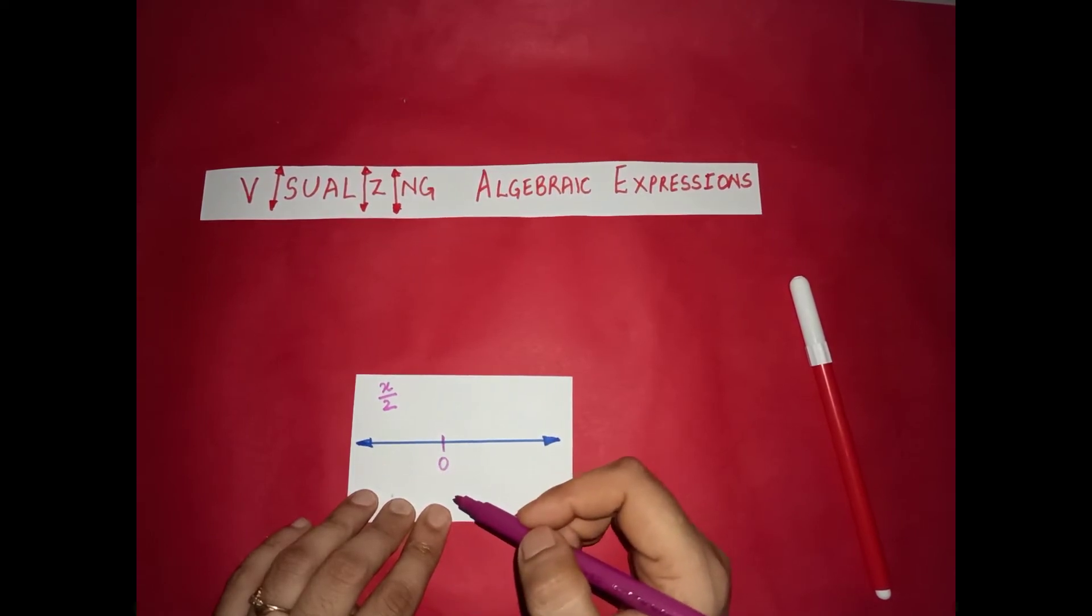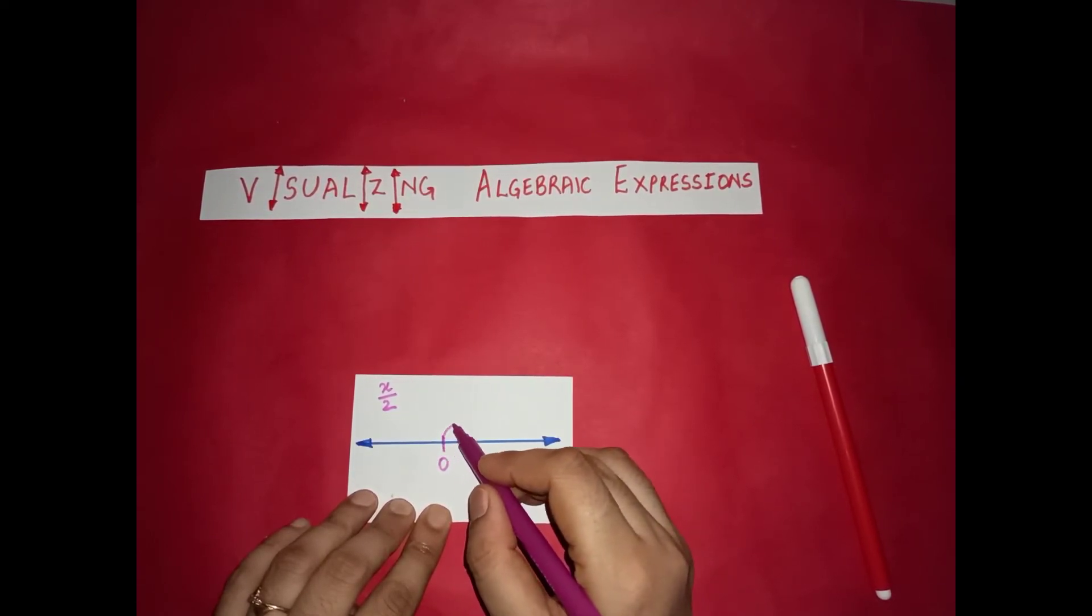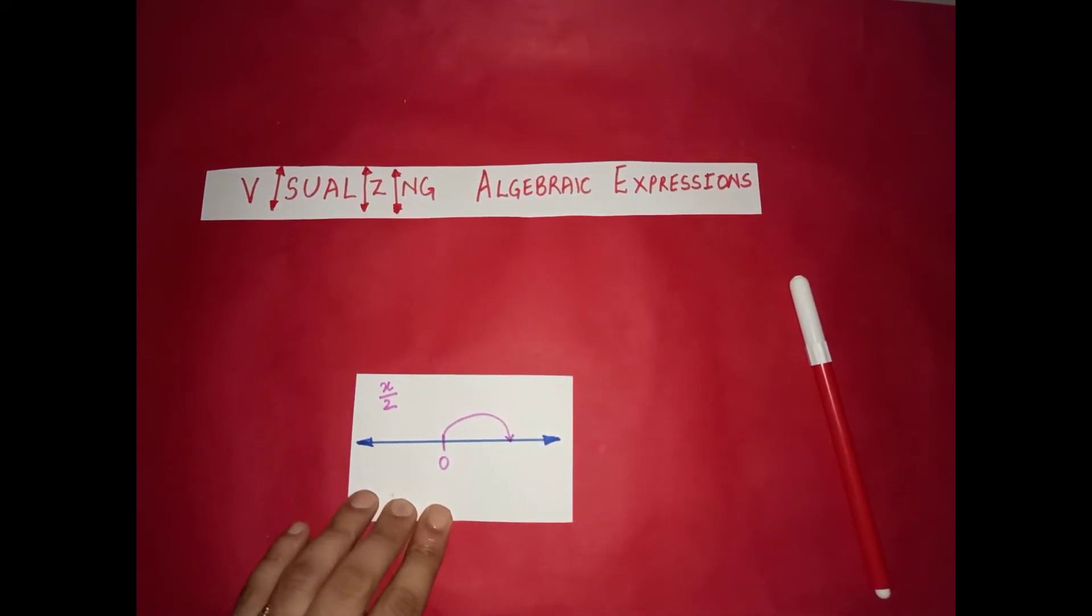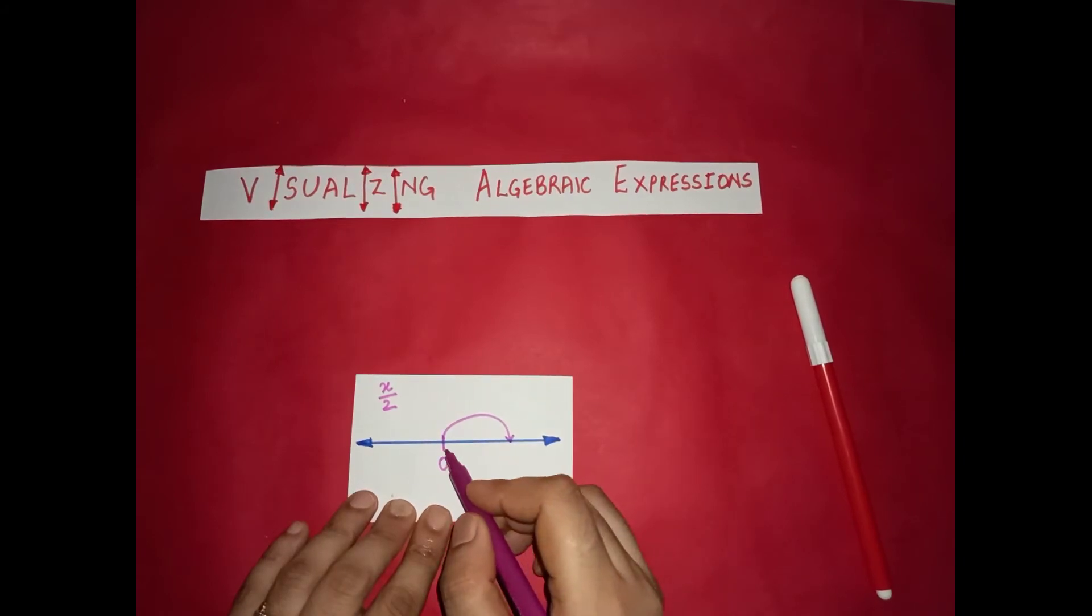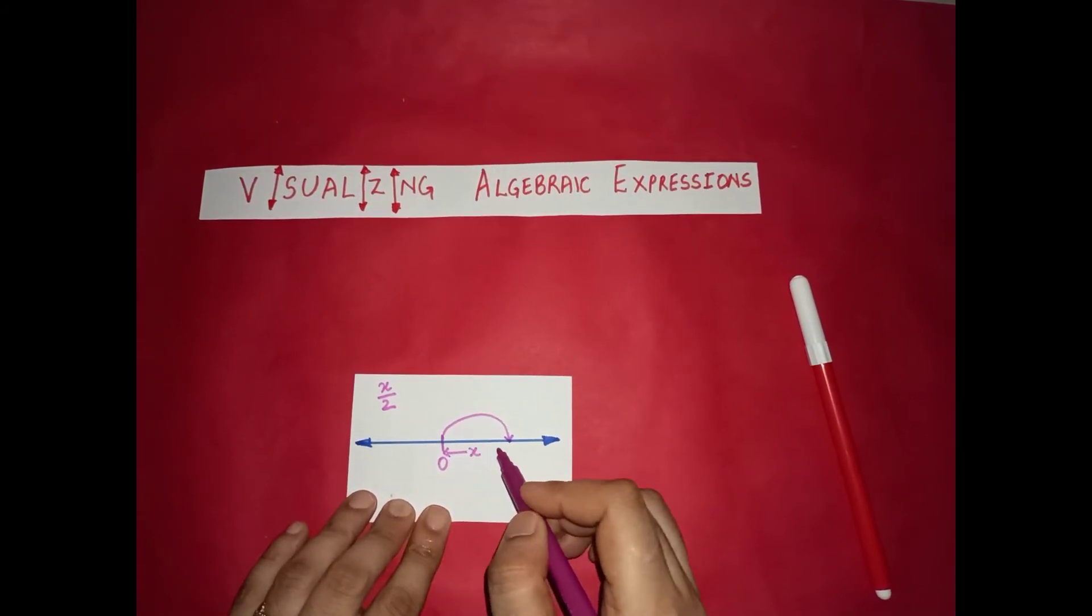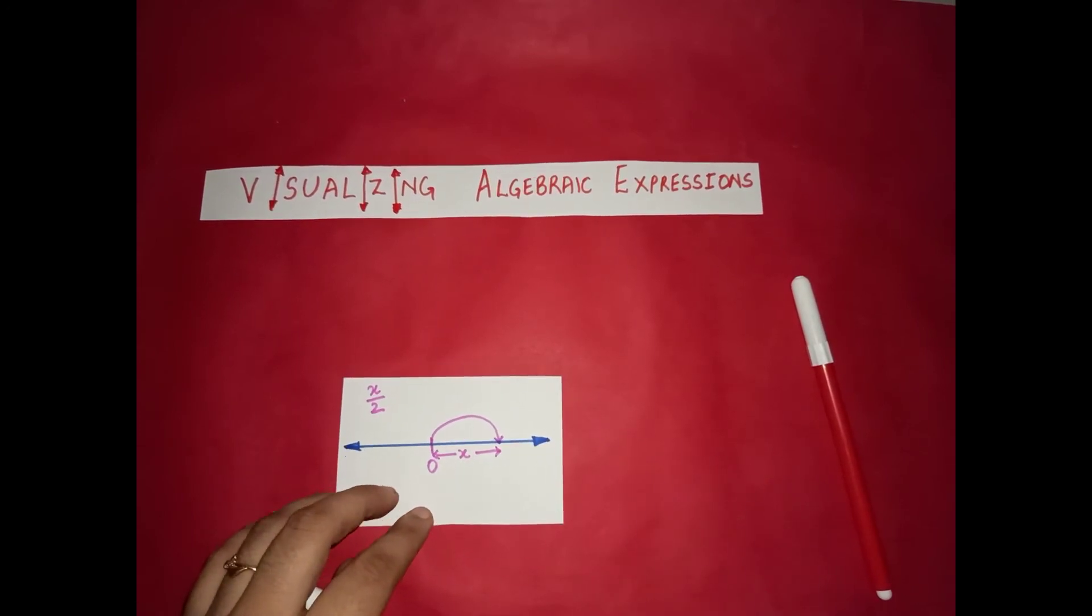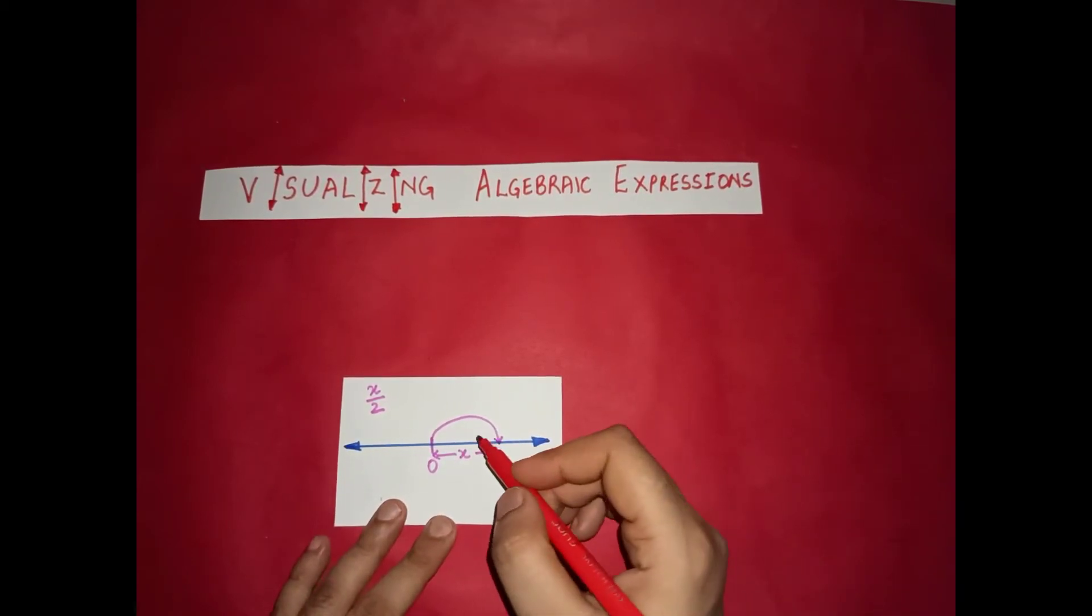This is the x distance. When we make this jump we cover a distance of x units. But we need to visualize x over 2. x over 2 means half of x. So we need to find out what is the half of this distance.